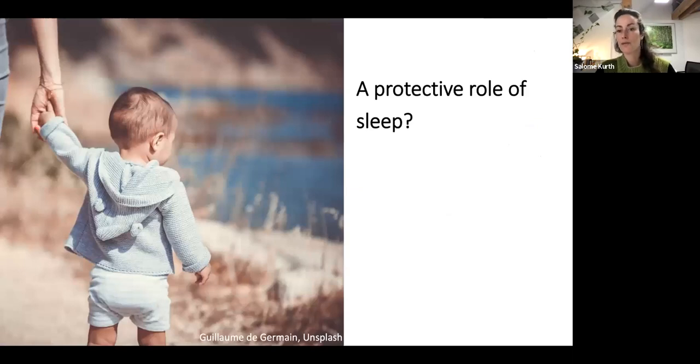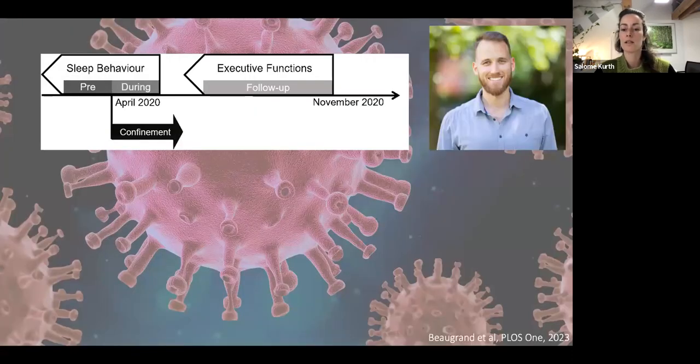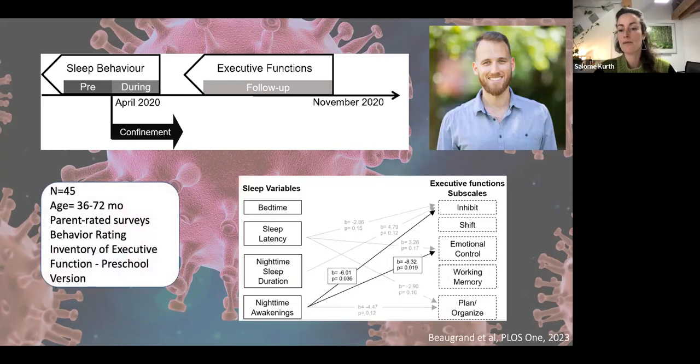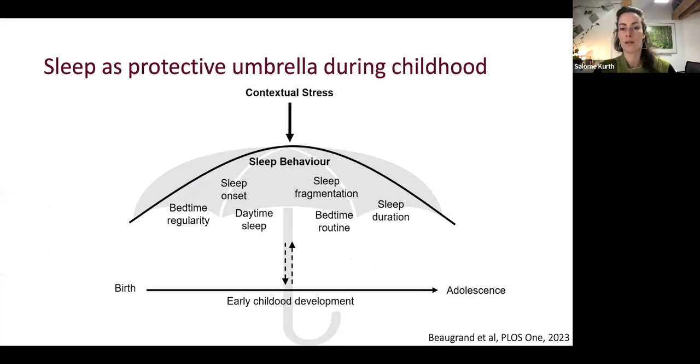Maybe just a brief wrap-up on the new paper. My PhD student Mathieu Beauchamp just published this paper in PLOS ONE, where we studied, does the sleep that has been worsened as part of the pandemic, how does that relate to later function? Just briefly, there are some relationships, particularly the kids who suffered from more nighttime awakenings because of the pandemic, those do show lower scores in cognitive function, particularly in inhibitory skills and emotional control six months later. This supports the concept that sleep does fulfill a protective role, like an umbrella during childhood, particularly during this period that is so vulnerable to influences of stress and to other influences that could interfere with development. This can be seen as a protective umbrella.